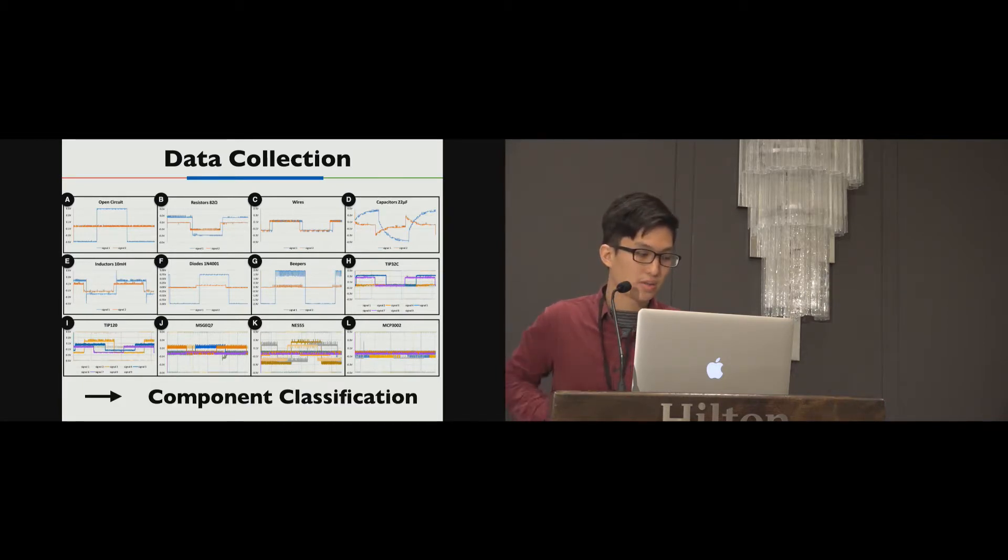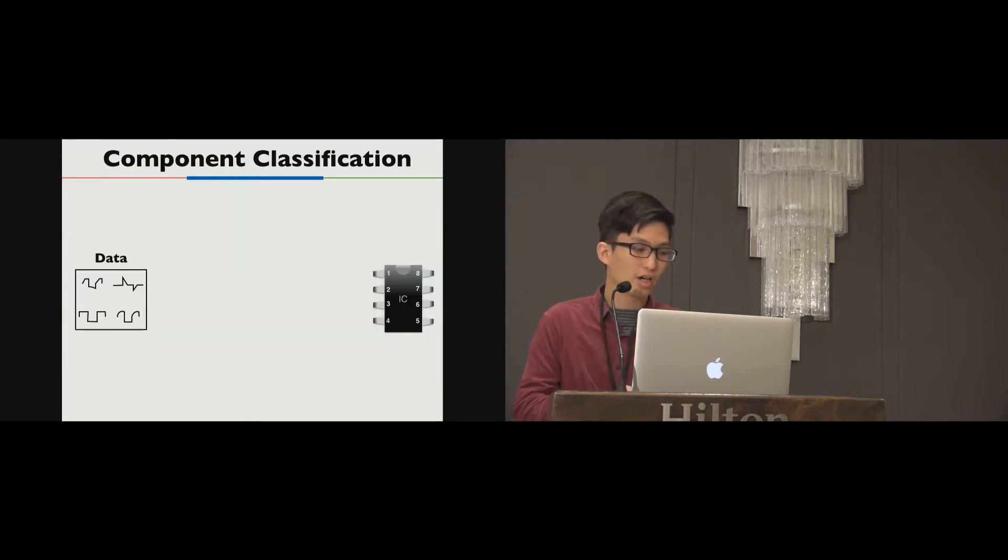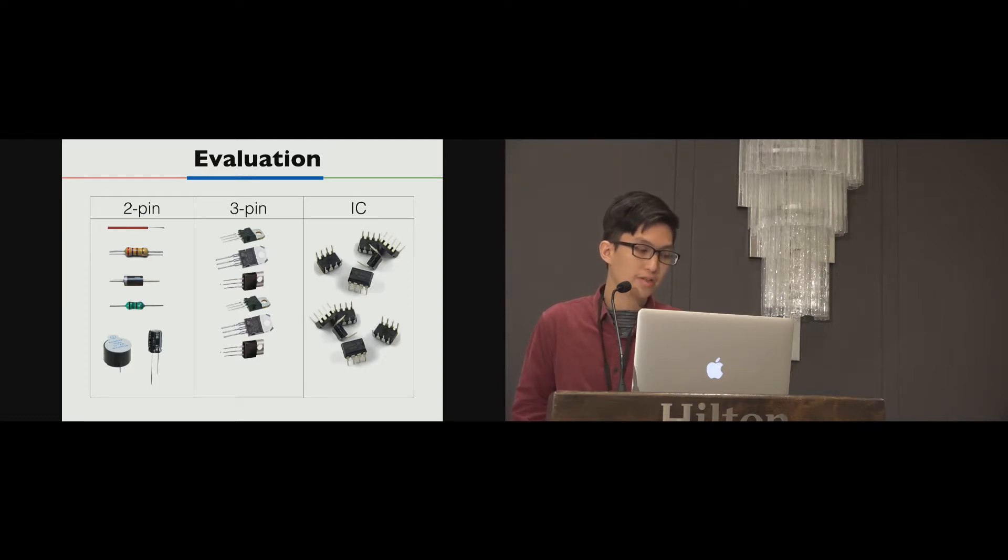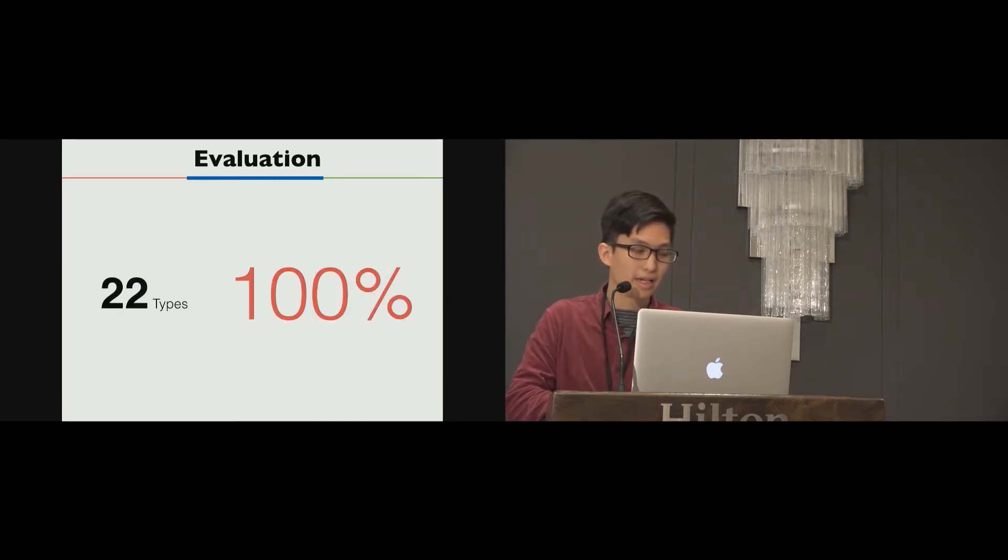Based on these waveforms, we apply machine learning technique to classify this data into the corresponding component. For the process of component classification, in each wave, we first retrieve statistical features from frequency and the time domain. And then, we combine all features into one vector as the input of random forest classifier. Finally, the classifier will recognize each data as the corresponding components. For training data, we collect 11,000 output waveforms. That is 500 for each type of components. And we evaluate the accuracy using cross-validation. And in our experiment, our system attains 100% accuracy to identify these 22 types of components.